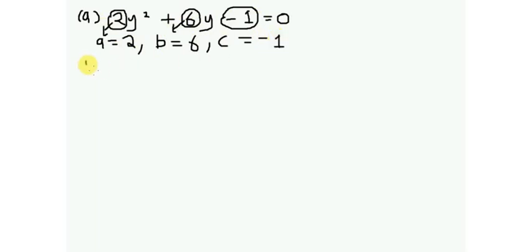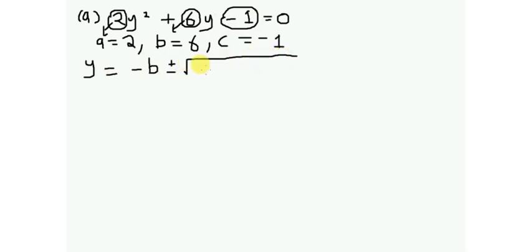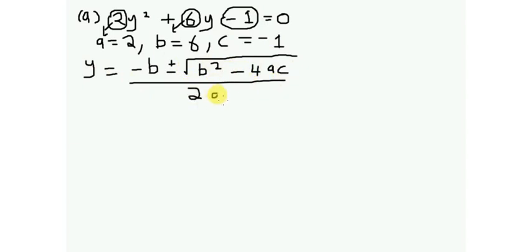The next step is to write the quadratic formula: y equals negative b plus or minus the square root of b squared minus 4ac, divided by 2a.